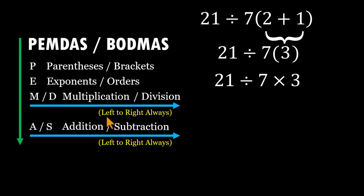We start from the left side of the expression. 21 divided by 7 is 3. Now bring the remaining 3 down. 3 times 3 equals 9. That's the correct answer.